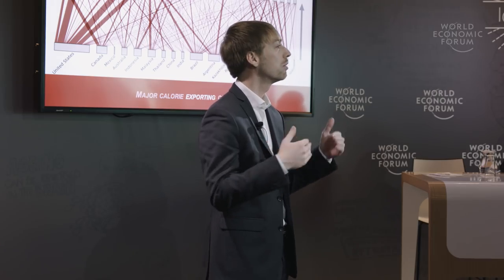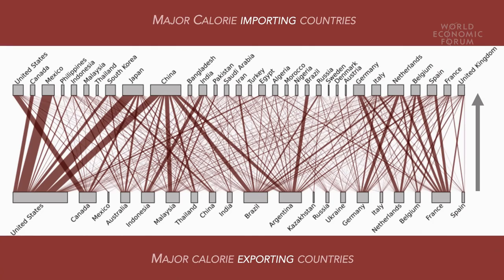However, trade also plays a crucial role in the food supplies of many nations. This network graph shows the largest calorie flows in agricultural trade globally from exporting to importing countries. The growth of trade has created a complex web of interdependence among countries in terms of food security and the global environment, the implications of which we do not fully understand.